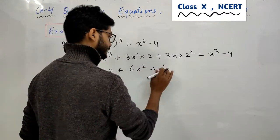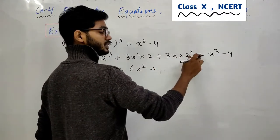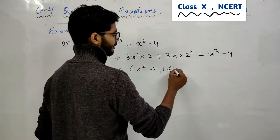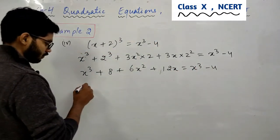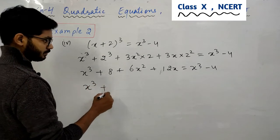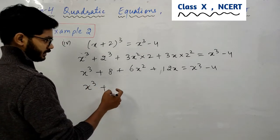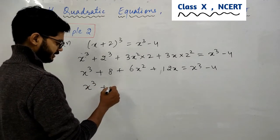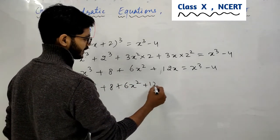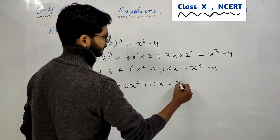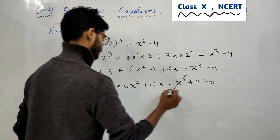यहाँ पर 6x². यहाँ पर क्या है का देखो 2,2 is a 4, 4,3 is a 12. 12x. यहाँ पर x³ - 4. Solve करते हैं x³ plus कोई number है नहीं है और कुछ है नहीं है भई 8 plus 6x² plus 12x.